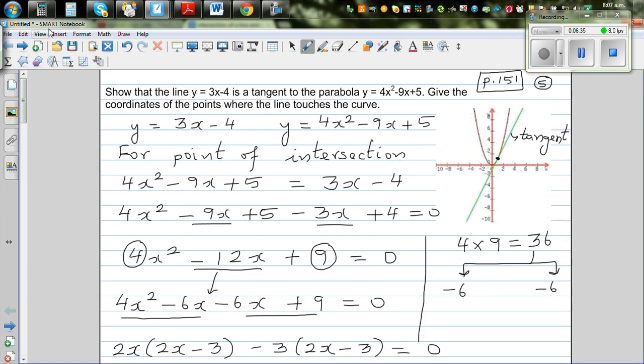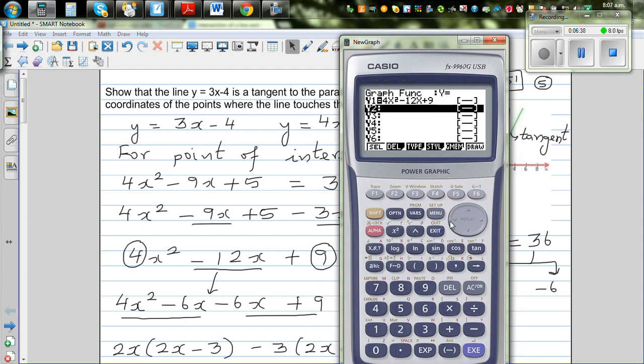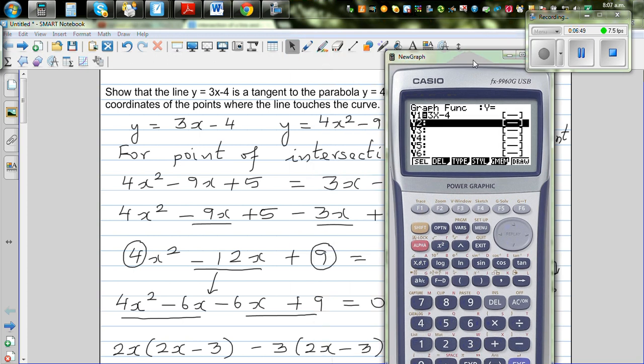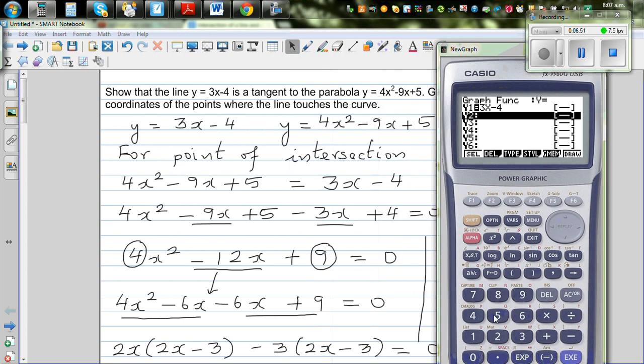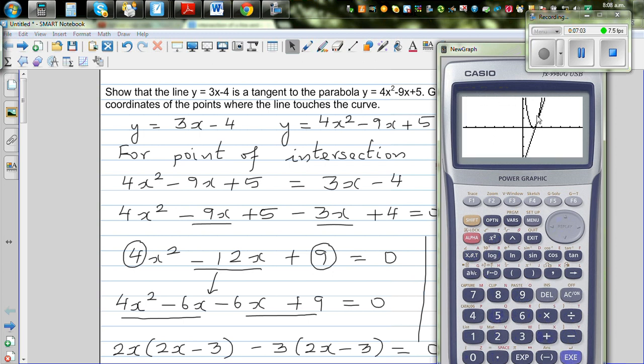Let's do this whole question graphically to give you an idea. You've got this equation. Let me type in again. 3x minus 4 is your line, and this is your parabola. In y2 you type in 4x squared minus 9x plus 5. This is a point of intersection. Can you see this is a tangent? To see this better, let me scroll up. Then you go G solve and intersection. 1.5, 0.5 is the point of intersection.